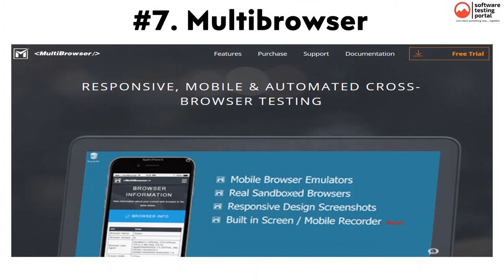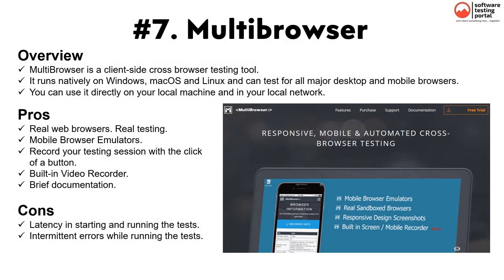The seventh tool is MultiBrowser. It is a client-side cross-browser testing tool that runs natively on Windows, Mac OS, and Linux, and can be used to test all major desktop and mobile browsers — directly on your local machine and in your local network. Pros include real web browsers and real testing, mobile browser emulators, the ability to record testing sessions with a click, test as many platforms as you want including custom devices, built-in video recorder, and brief documentation. Cons are latency in starting and running tests, and intermittent errors.